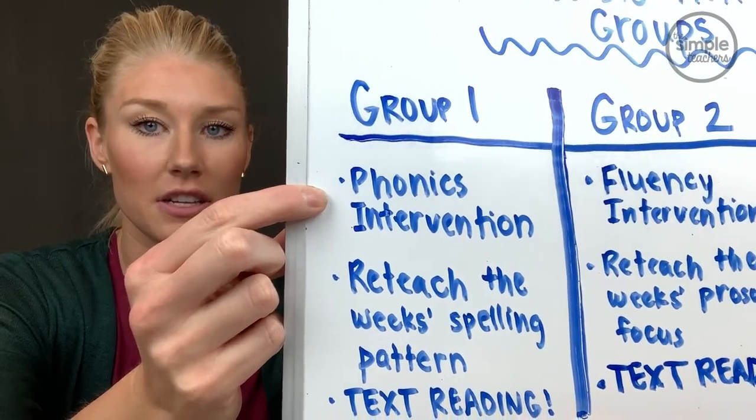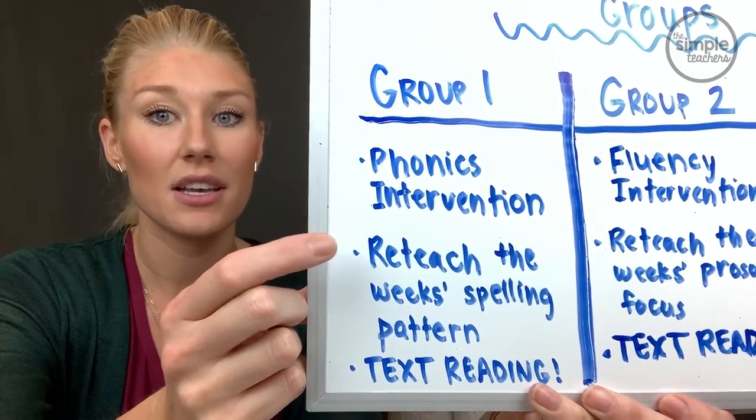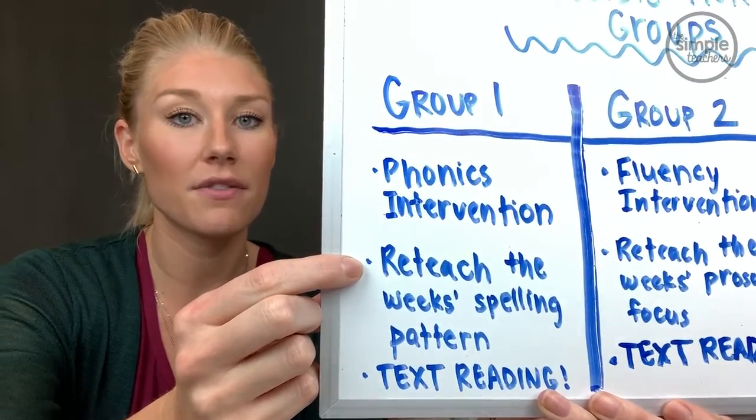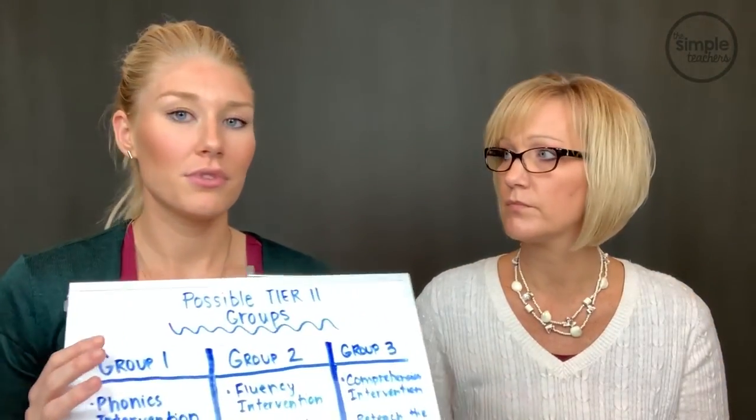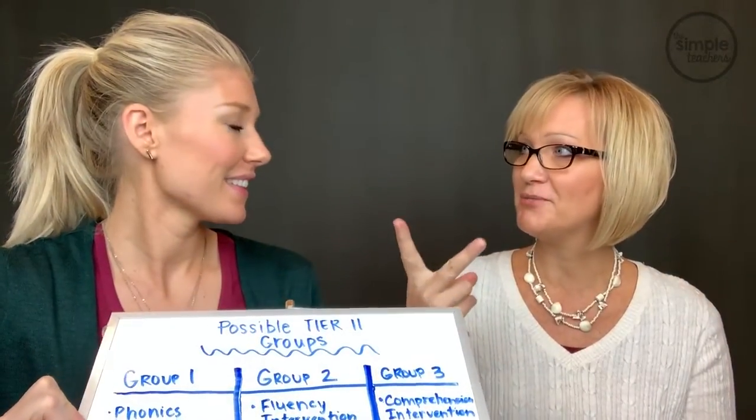These kids need a phonics intervention. One way is to reteach your week's sound-spelling focus — for example, the long O sound and its spellings. Make sure you get into text reading. You could use the same text from Tier 1, or a different text depending on your resources. You could also give a phonics intervention on multisyllabic word reading if students know their sounds and spellings but struggle with multisyllabic words. Every text you're reading in class likely has those multisyllabic words, so that's an easy, effective phonics intervention.